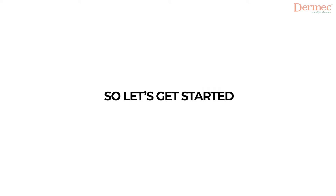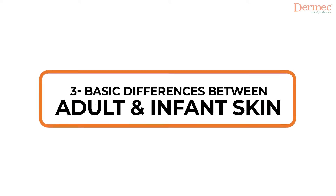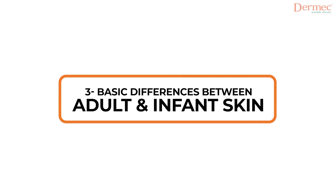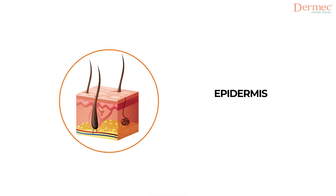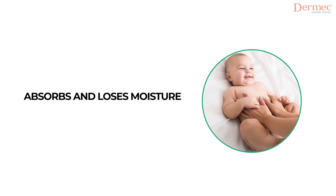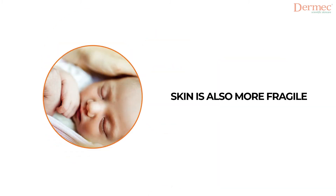Let's get started and learn about the three basic differences between adult and infant skin. The first difference is that the epidermis, which is the outer layer of the baby skin, is 20 to 30 percent thinner than the adult skin. Infant skin absorbs and loses moisture more quickly than that of an adult skin.